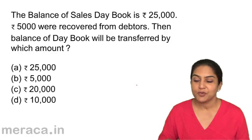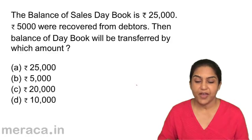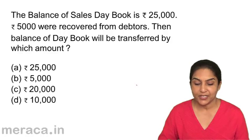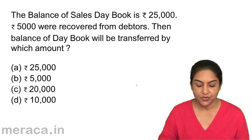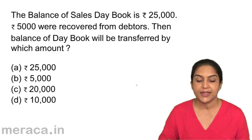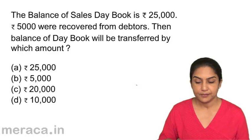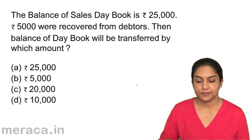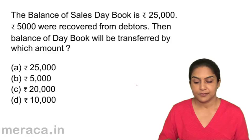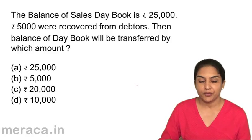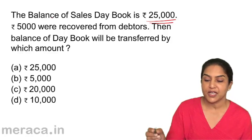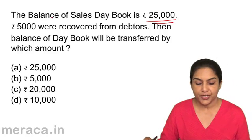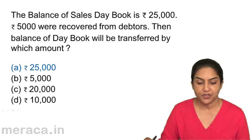The balance of the sales day book is $25,000. $5,000 were recovered from debtors. Then the balance of the day book will be transferred by which amount? a) $25,000, b) $5,000, c) $20,000, or d) $10,000. The day book will transfer the entire sales balance — the total of the sales day book, $25,000. Correct answer should be a: $25,000.